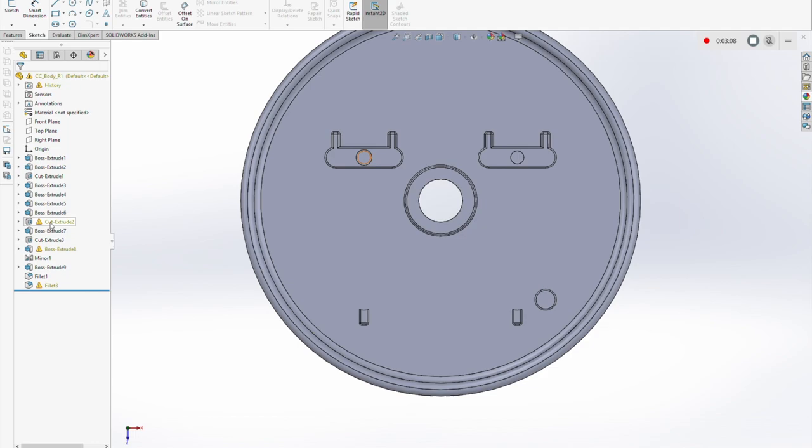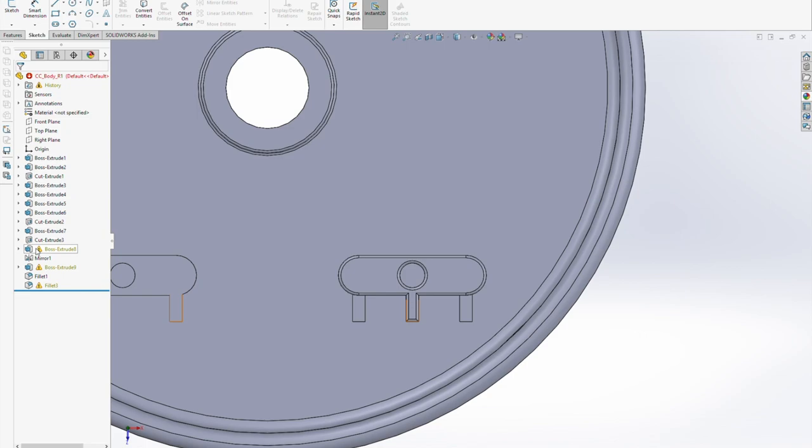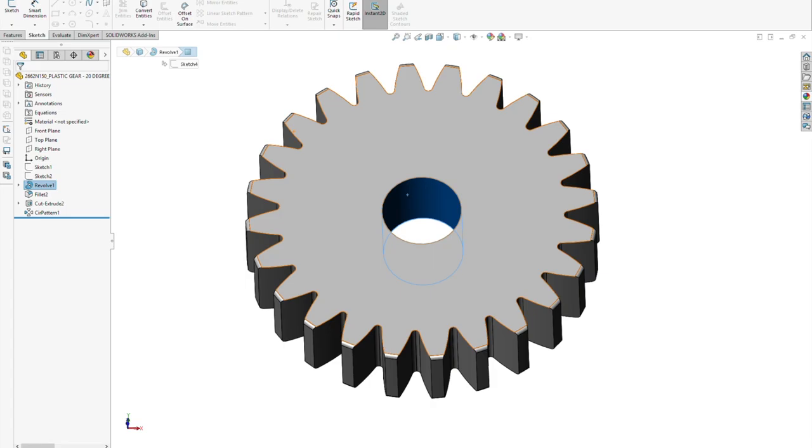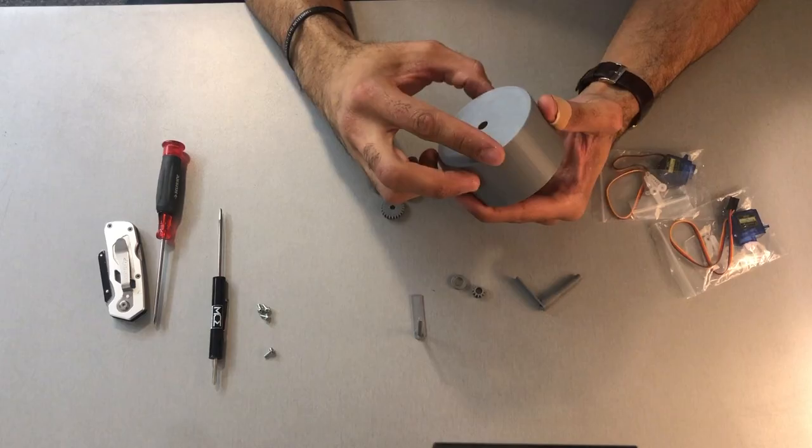Ultimately I decided to go back into the CAD and modify the mounts to accept a more standard servo that I could buy in bulk. The original ones I used were left over from a different project and weren't ultimately what I wanted to go with for this. After making a few edits and printing some new parts it was ready to test again.